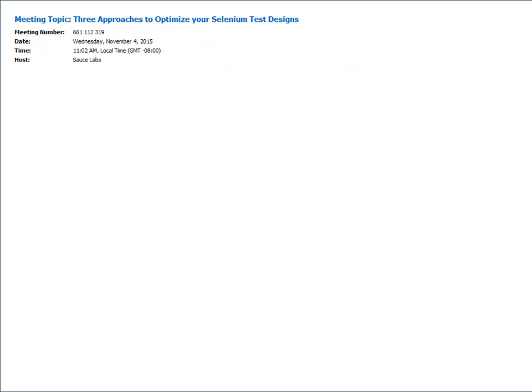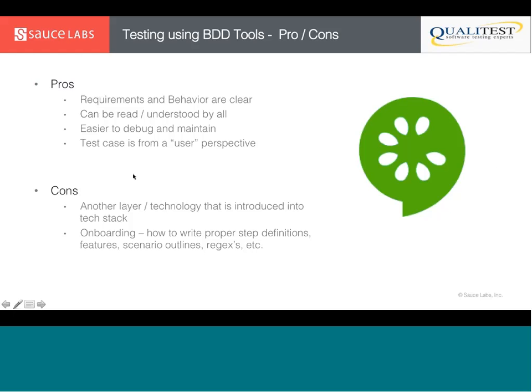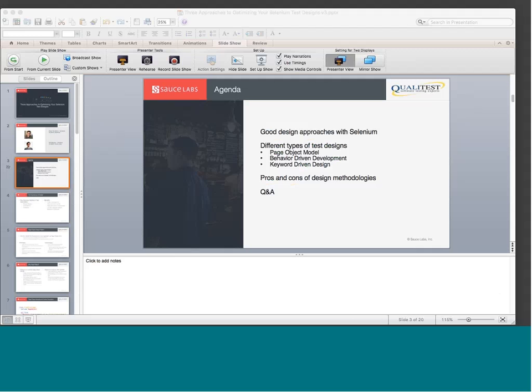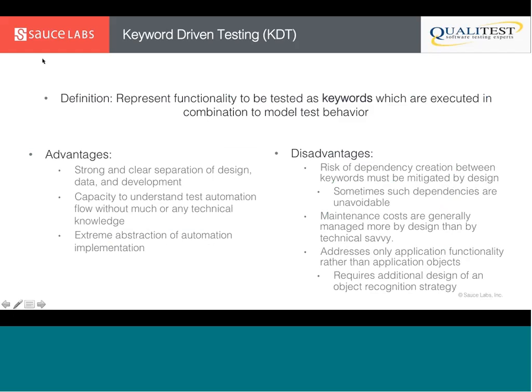That demo highlights in a succinct way the power you can get out of page objects and BDD together. The next approach we want to talk about is keyword-driven testing as a design approach to test automation. So what is keyword-driven testing?